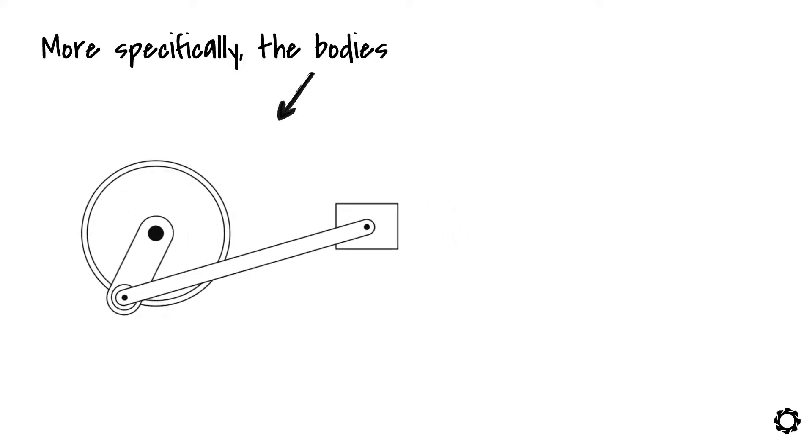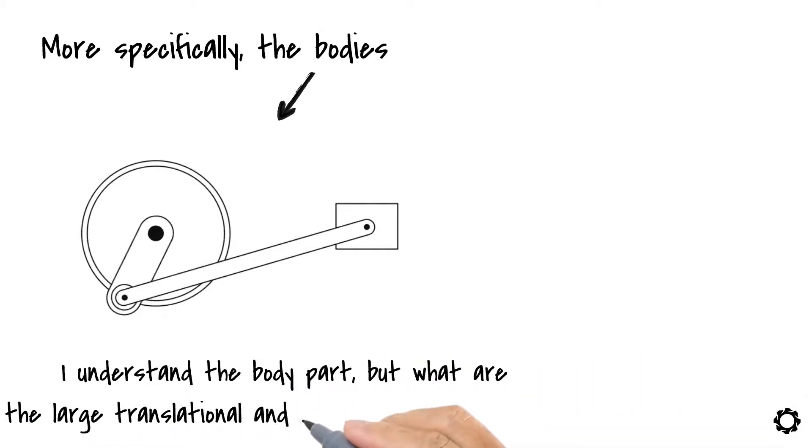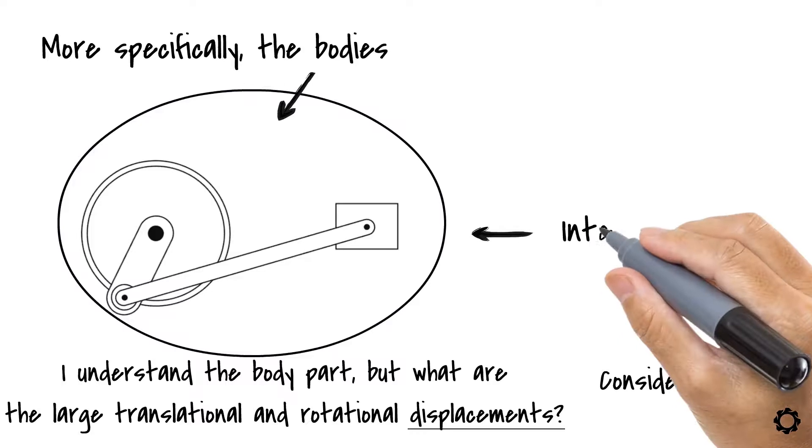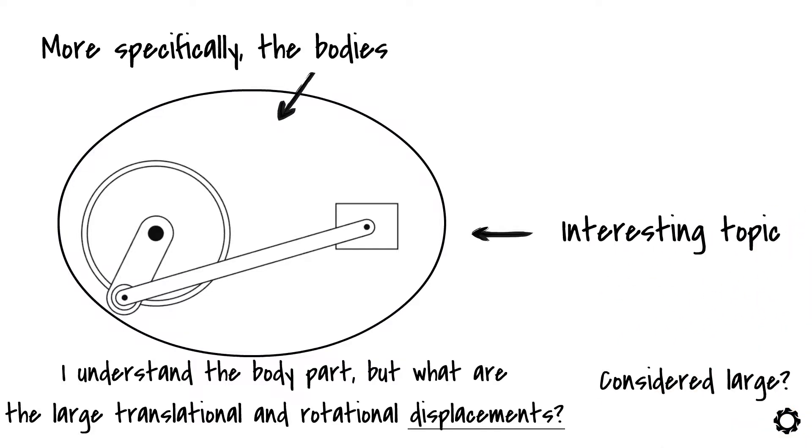Surely you're thinking right now, okay, I understand the body part, but what are the large translational and rotational displacements? When can a displacement be considered large so that I can relate it to a multibody? This is an interesting topic.